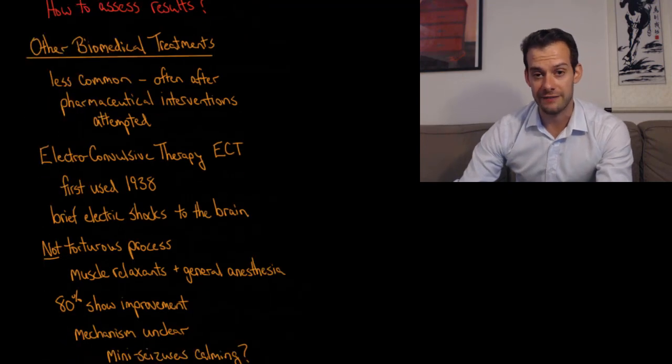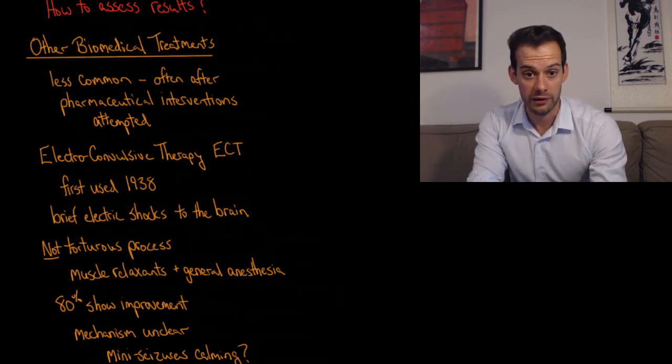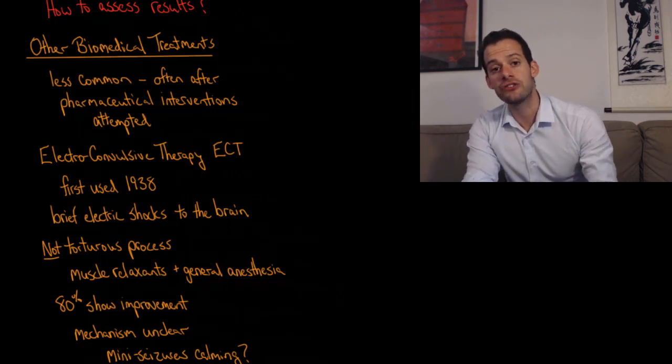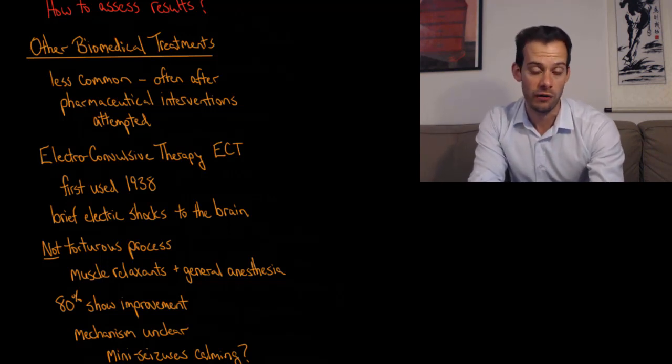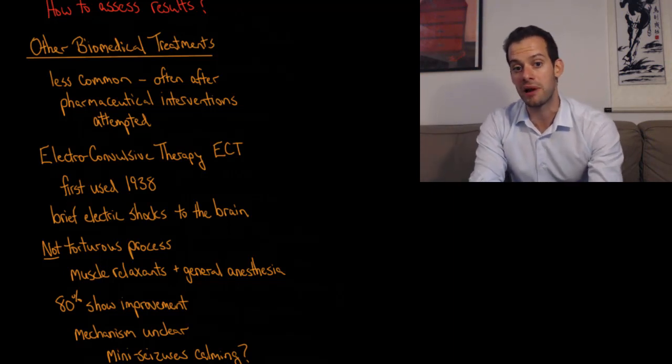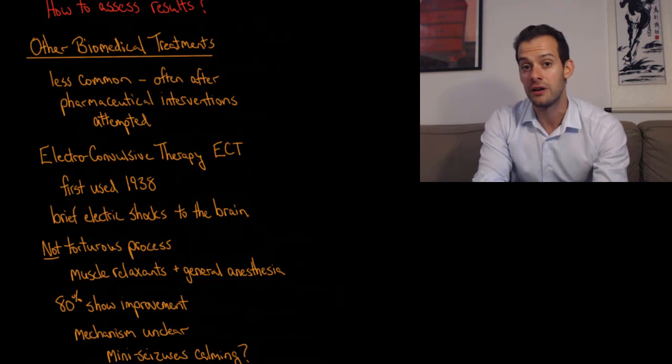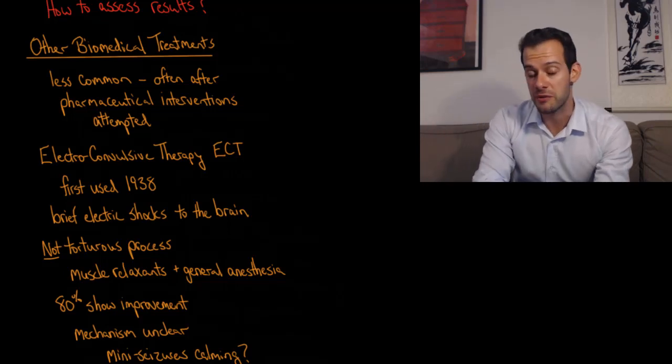Those are some of the challenges of thinking about effectiveness of drug therapies. We also have some other biomedical treatments that are used, although these are much more rare. They're often used after some other pharmaceutical interventions have been attempted but have not worked well for a particular patient. After they've tried taking SSRIs for their depression and nothing seems to work, maybe they've also tried some other classes of antidepressants and some types of therapy.